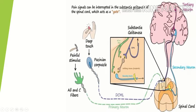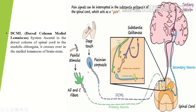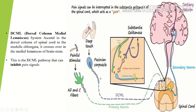The signal for deep touch is transmitted by the DCML system, or the dorsal column medial lemniscus system. This system ascends ipsilaterally on the same side in the dorsal column of the spinal cord to the medulla oblongata, where it crosses over the medial lemniscus of the brain stem. It is the DCML pathway that can inhibit pain signals.